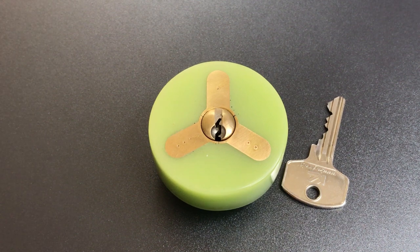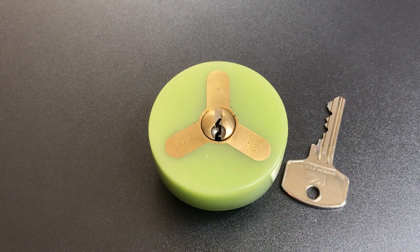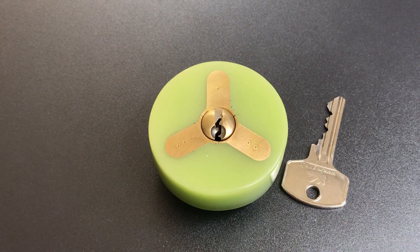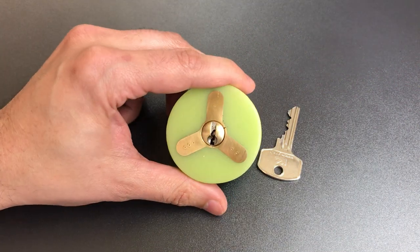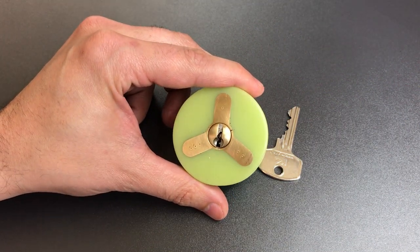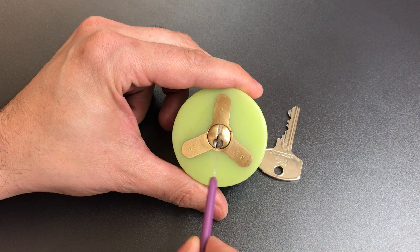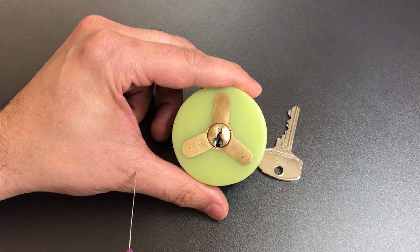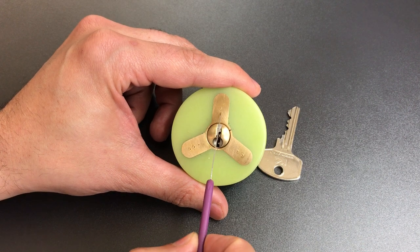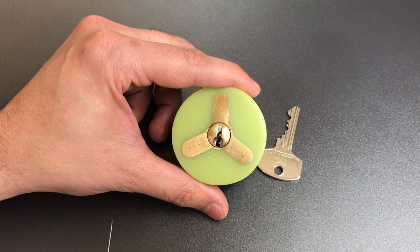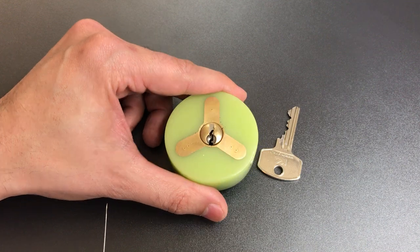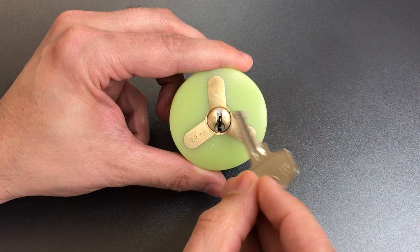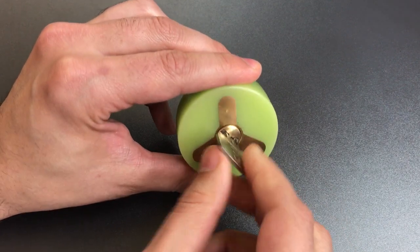This is the Lockpicking Lawyer, and what I have for you today is Julian and Tobias' incredible three-lobe challenge lock. They took three euro profile cylinders, cut the bottom two-thirds off of each one, arranged them into this tri-lobe pattern, and encased the entire assembly in green acrylic. A different set of challenge pins was put into each of the three bibles, so we need to pick this three times. I do have a key for it, and the entire thing works very nicely.